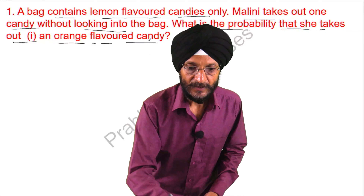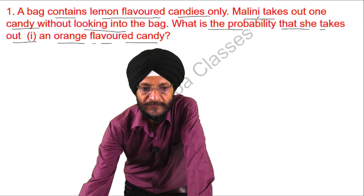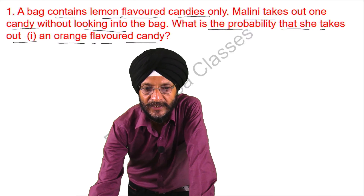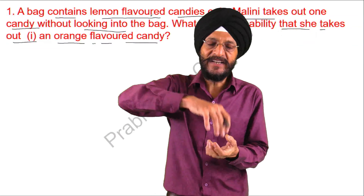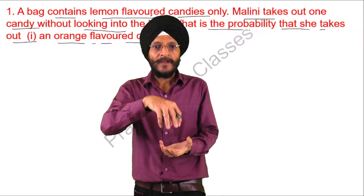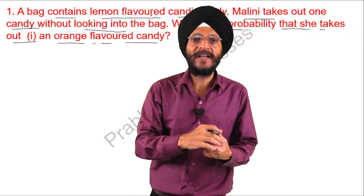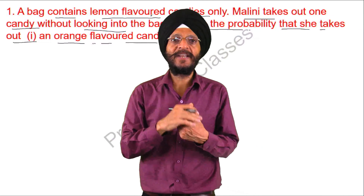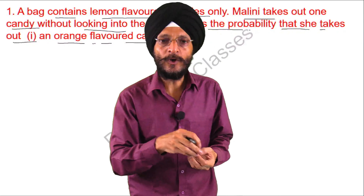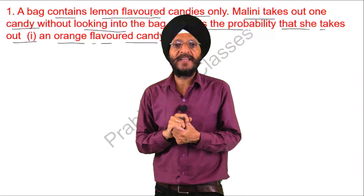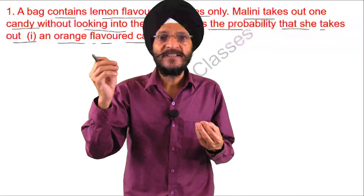In the same way, Melanie is having only lemon flavored candies in her bag. So every time she puts her hand into the bag to pick out a candy, it will be a lemon candy only. And as she has not placed any orange flavored candy in her bag, the probability of getting an orange candy is zero.